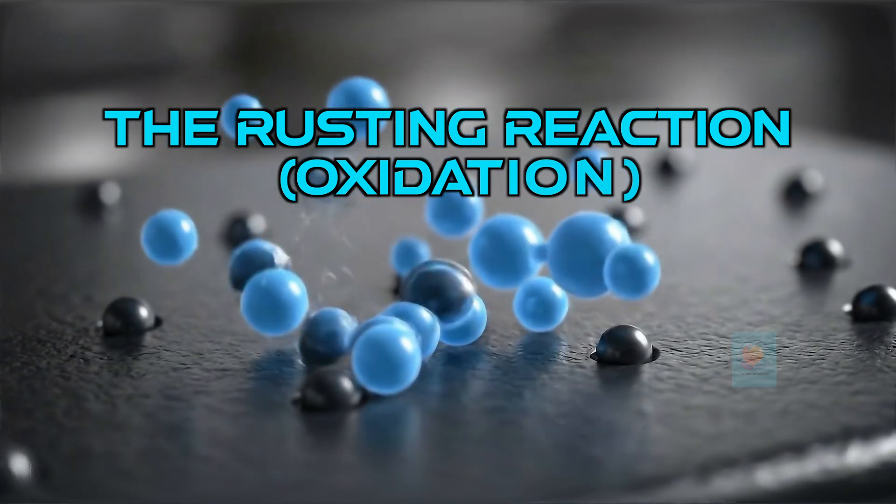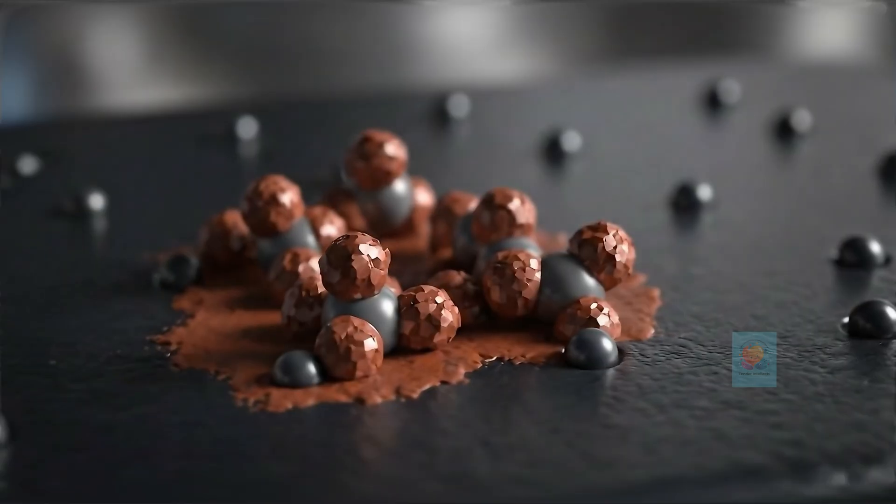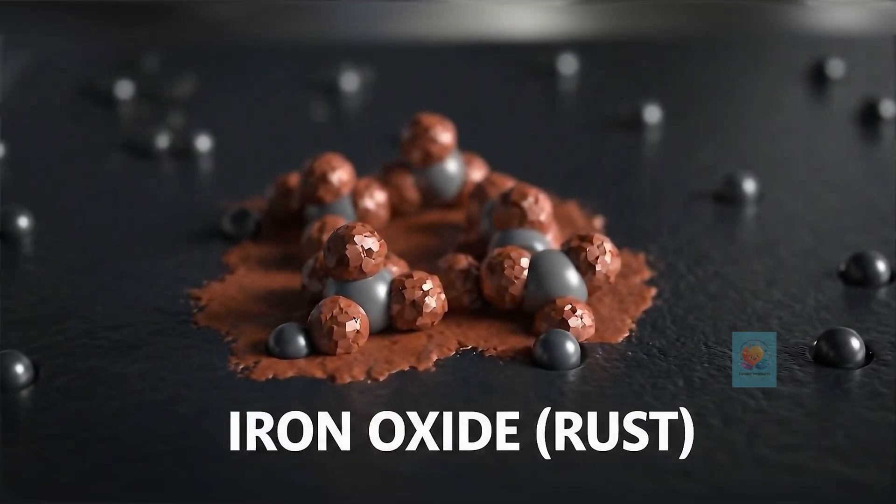Even rust is a product of a slow chemical reaction. It forms when iron atoms react with oxygen atoms over time to create a new substance called iron oxide.